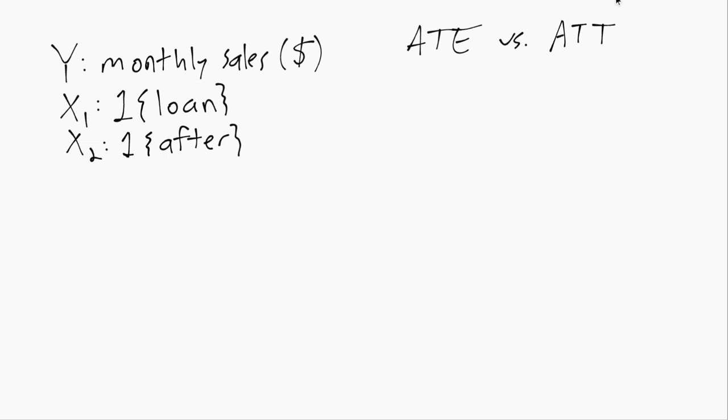And then X2, as usual, is the dummy variable for the after period.